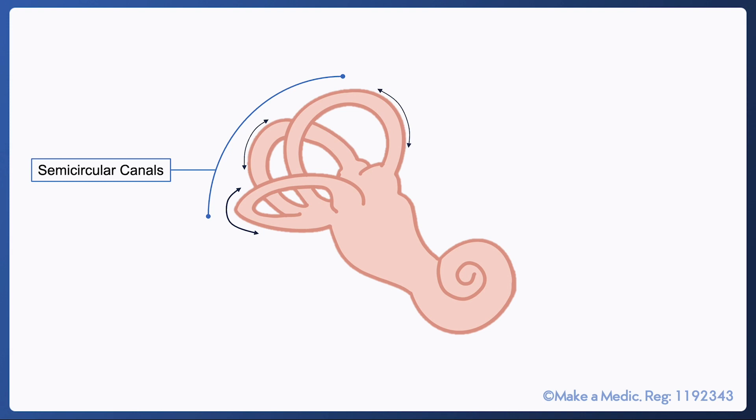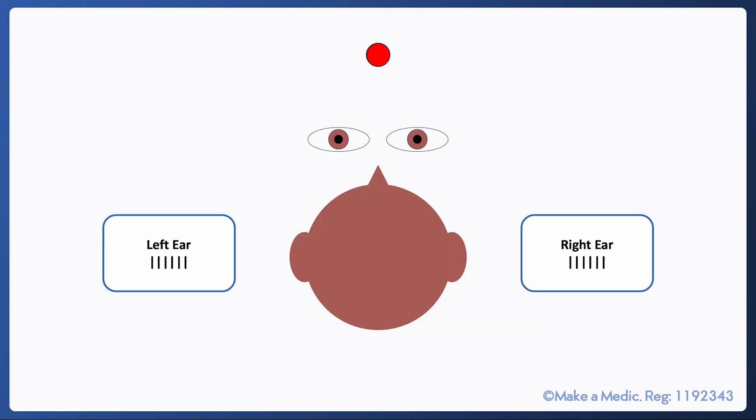The semicircular canals, the utricle and the saccule which detect rotational, horizontal and vertical movements respectively. So let's focus on horizontal rotational movement and imagine that you're looking at this patient from the top down so you're basically staring at the crown of their head and I'll just put the eyes there as well for you to make sense of how they correlate.